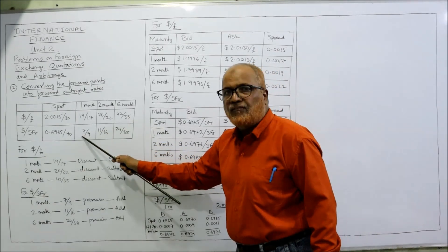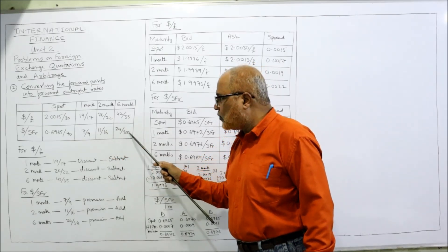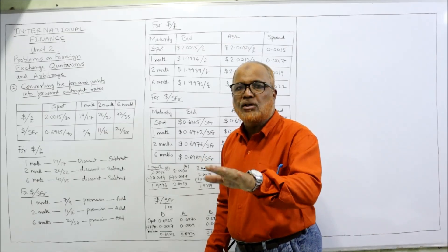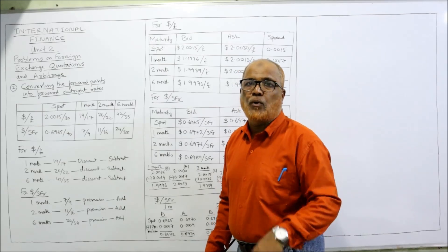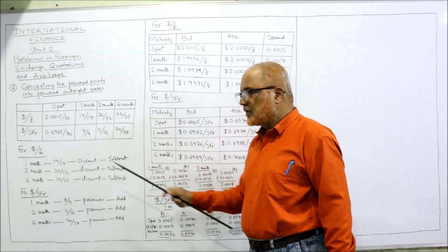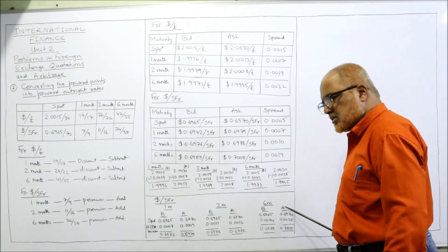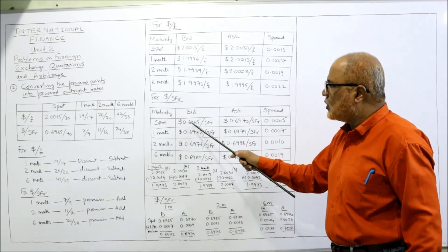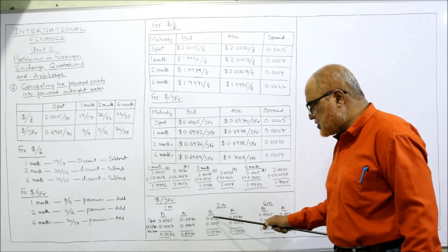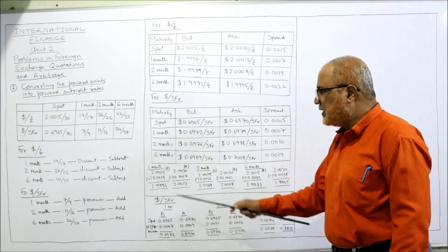For the forward points of dollar per SFR — 7/9, 11/16, and 24/38 — the bid point is smaller in all cases, so the foreign currency goes at premium. We have to add these points to the spot rate. For the spot rate: bid is 0.6965 and ask is 0.6970.